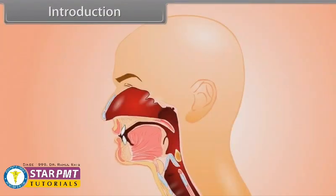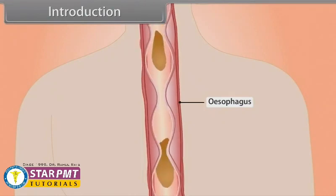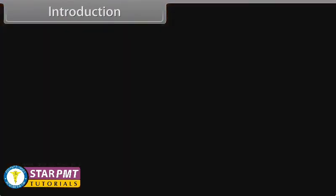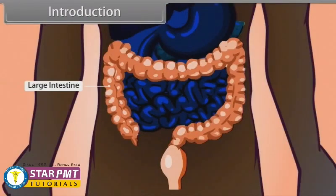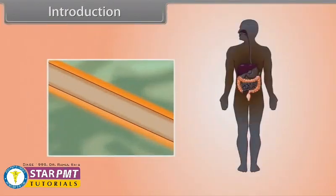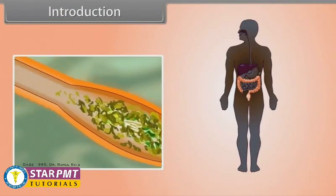Through the mouth and then through the esophagus, food goes to the stomach where digestion of protein starts. Then food enters into the small intestine, from where the undigested food goes to the large intestine and then is ejected out from the body through the anus. After the digestion of food, the nutrients are absorbed from the digested products.